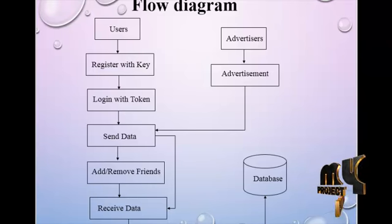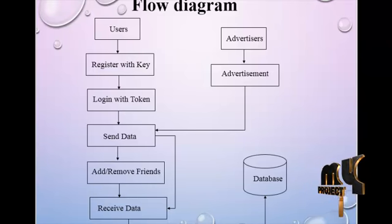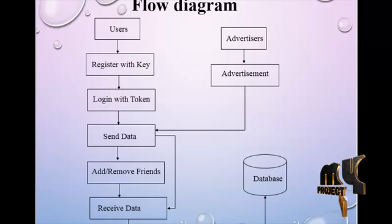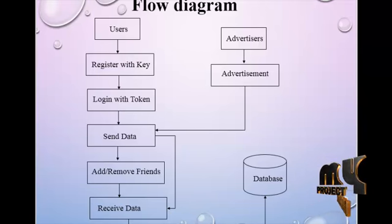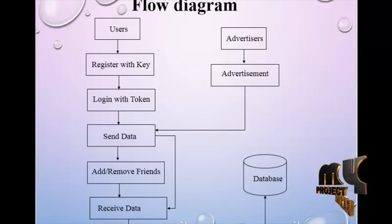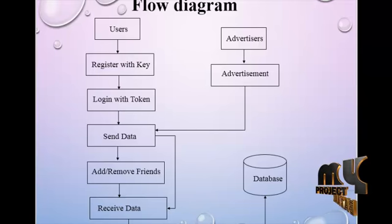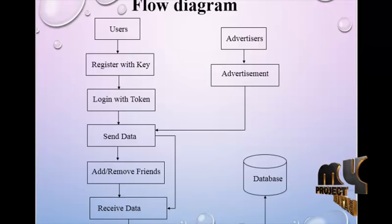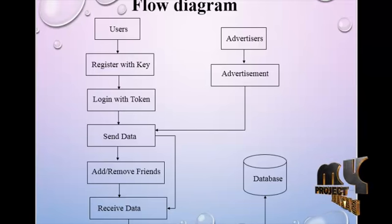The flow diagram shows the overall process of our system. The main models are the user and advertisers, with the user being the main role. While registering to the online social network, users should register with their personal details like phone numbers.